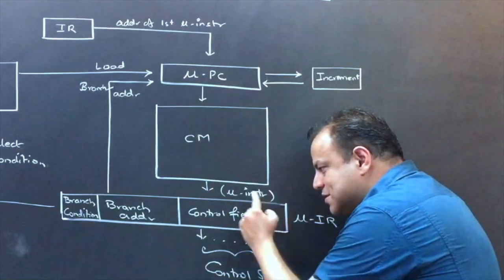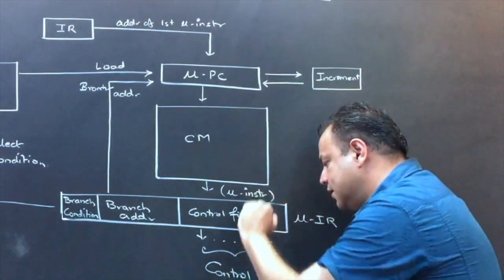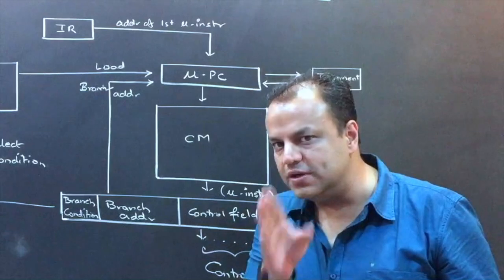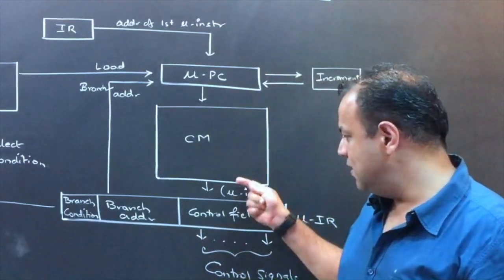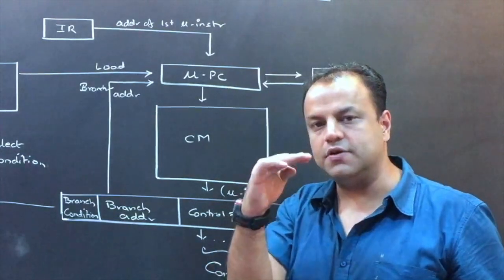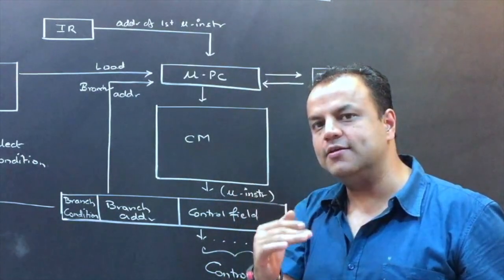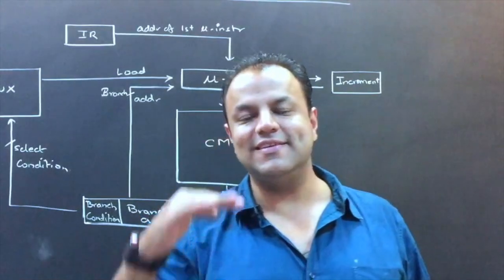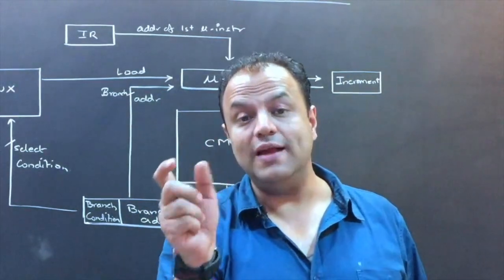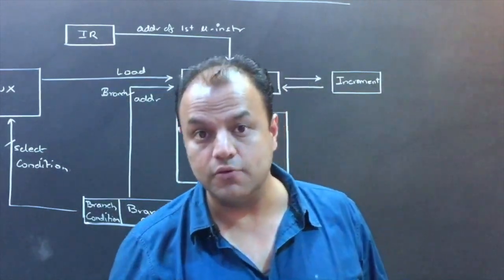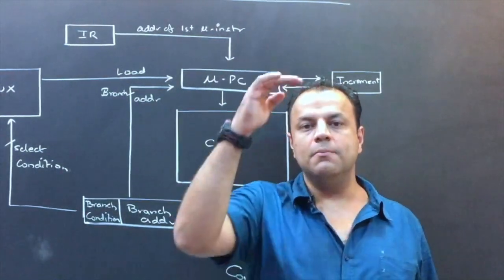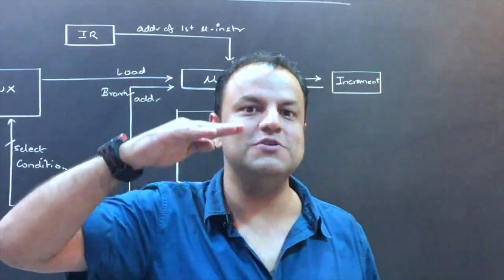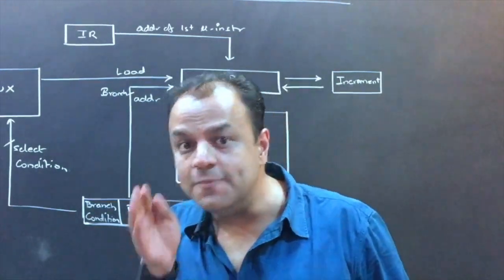The micro instruction will have only one field — the control field. It will simply release control signals; that's what we want. There will be no address field. Once control signals are released, you've executed one micro instruction. Thereafter the micro program executes in a sequential manner. This defeats the drawback in Wilkes' design, where every micro instruction had to give the address of the next micro instruction, costing vital control memory space.